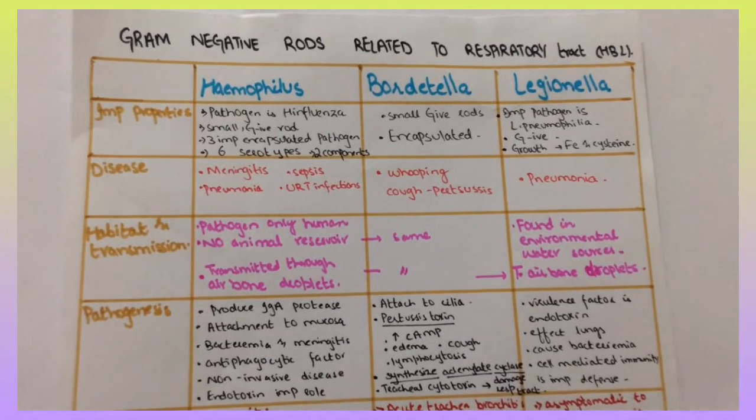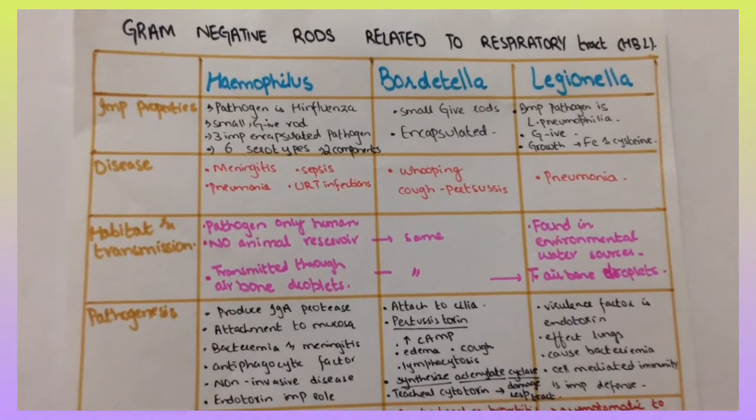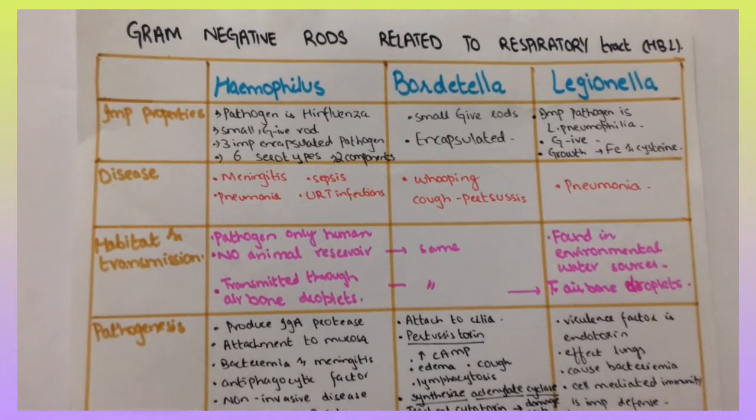Bordetella causes pertussis, it is small gram-negative rod, encapsulated. Legionella is important. Pathogen is Legionella pneumophila. It is gram-negative and growth requires cysteine, it causes pneumonia.